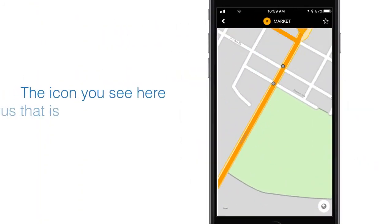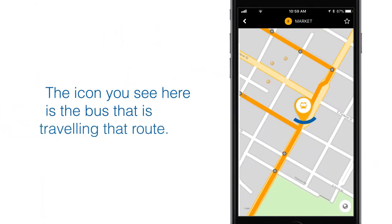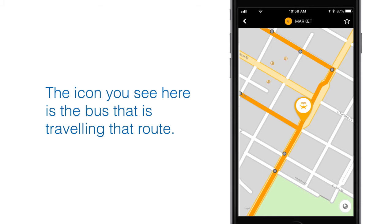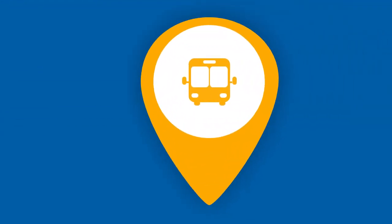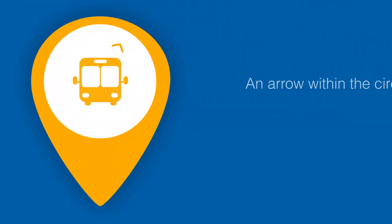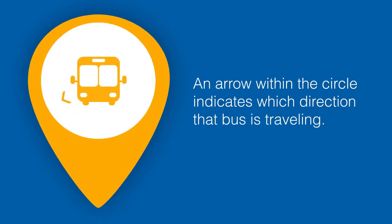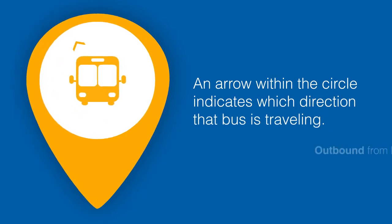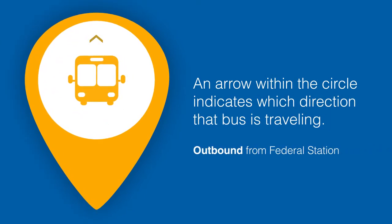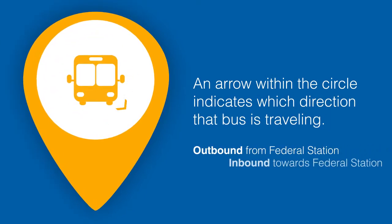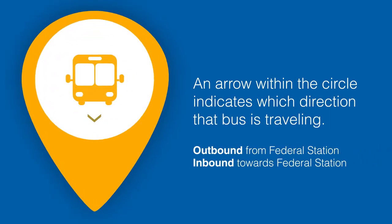The icon you see here is the bus that is traveling that route. Zoom in closer on the icon, and you'll see an arrow within the circle that indicates which direction that bus is traveling — outbound from Federal Station or inbound towards it.